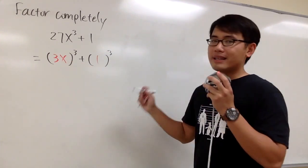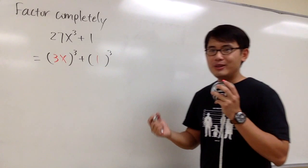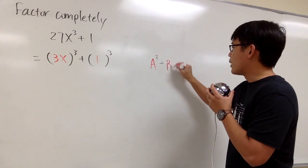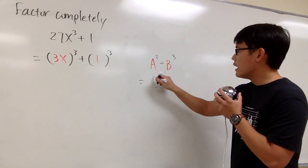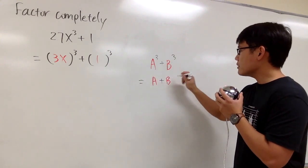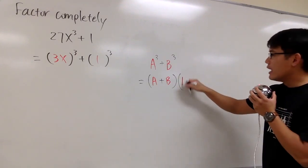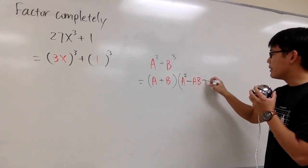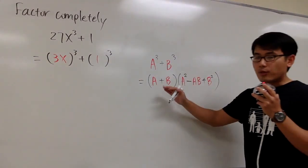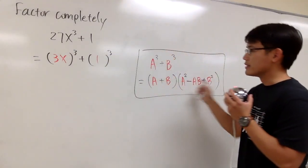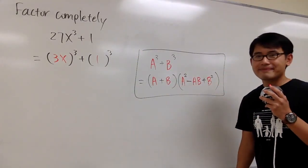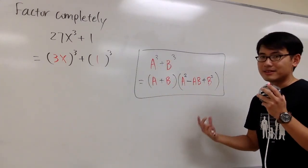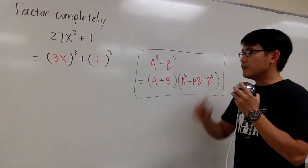By putting it down in this format, we are ready to factor. But first, we need to remember and use the formula. We remember the formula: a to the third power plus b to the third power — the sum of two cubes — is going to be (a plus b) as the first parentheses, and then for the second parentheses, we will have a squared minus ab plus b squared. Pay close attention to the signs: plus, plus, then minus — these two signs are different compared to the difference of two cubes formula.